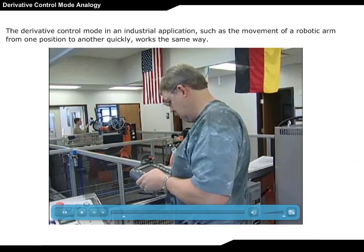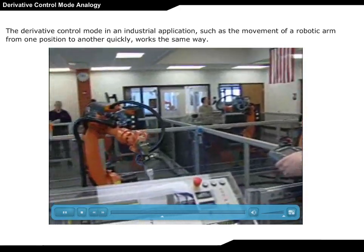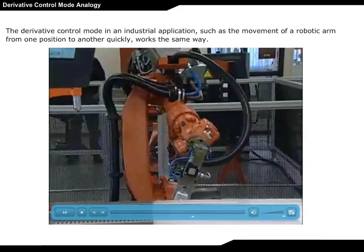The derivative control mode in an industrial application, such as the movement of a robotic arm from one position to another quickly, works the same way.